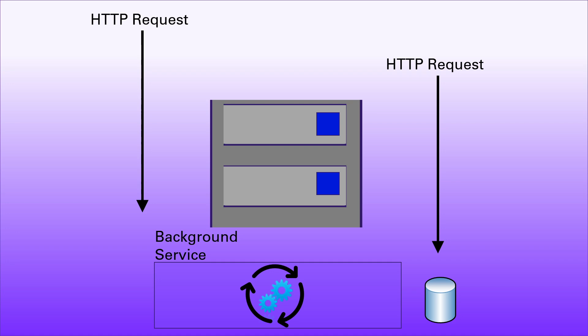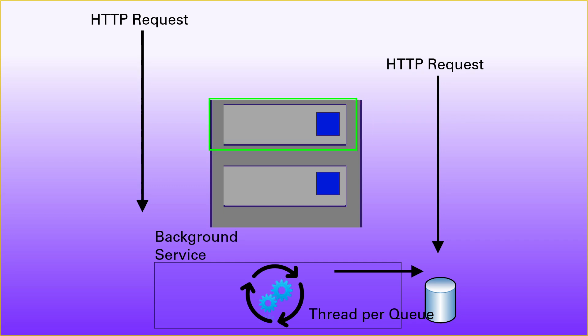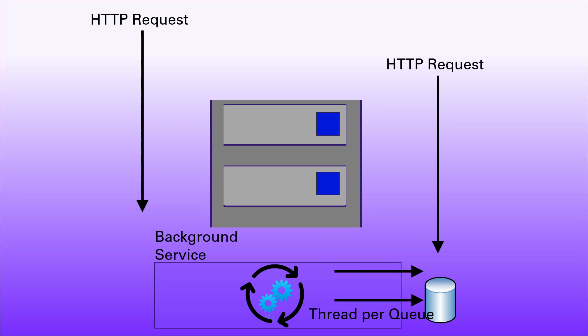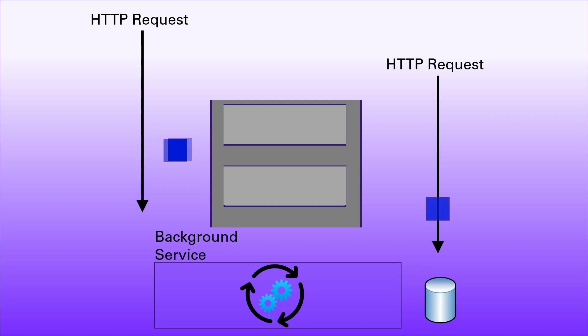Our background service then wakes up and iterates over that list. For every request queue it finds, it creates a background thread. Each of those threads then consumes the messages off of that queue, processes them, and does what it needs to do — in this case pushing them to a database, but it could be an API call, logging, or whatever your background processing needs to do with those work items. Once those threads have completed, the service goes back to sleep again while HTTP requests continue pushing more data into those queues.